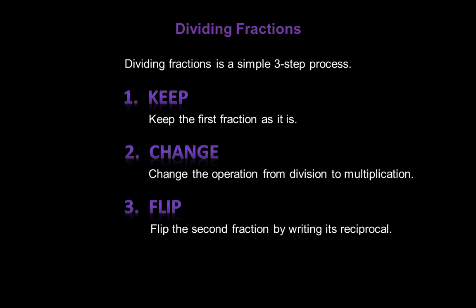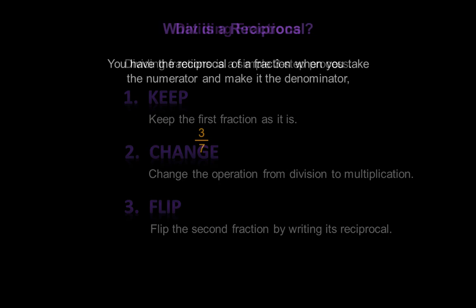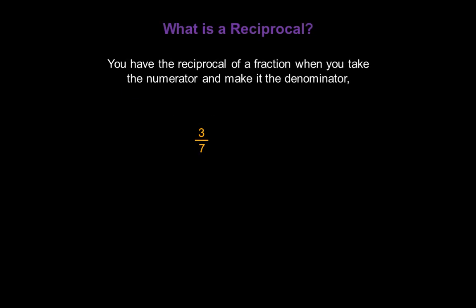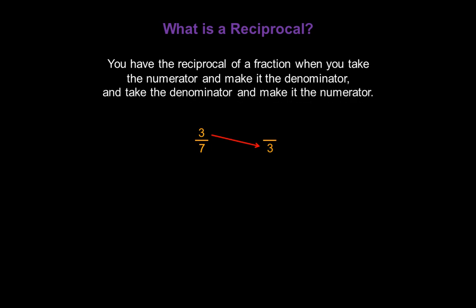Now, you might be asking yourself: what is a reciprocal? Well, take a look at this fraction: 3 over 7. You have the reciprocal of a fraction when you take the numerator and make it the denominator of a new fraction, and take the denominator and make it the numerator. So 7 over 3 is the reciprocal of 3 over 7.